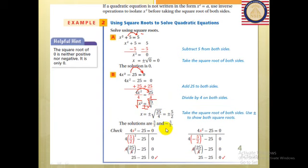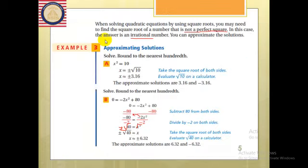We explained all of this in the last video — if you want to revise, check the YouTube channel. And if I have a number which is not a perfect square, I will have an irrational number, so I'm going to approximate it to the nearest hundredth. Don't forget that I still have two values: positive and negative.